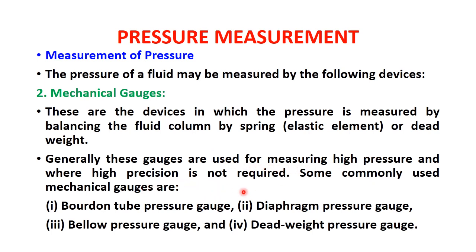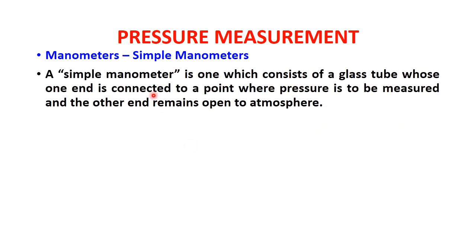Commonly used mechanical gauges include: first, the Bourdon tube pressure gauge, which is mostly used in industry and laboratory equipment; second, the diaphragm pressure gauge; third, the bellows pressure gauge; and fourth, the dead weight pressure gauge. The dead weight pressure gauge is used for calibrating all types of pressure gauges.